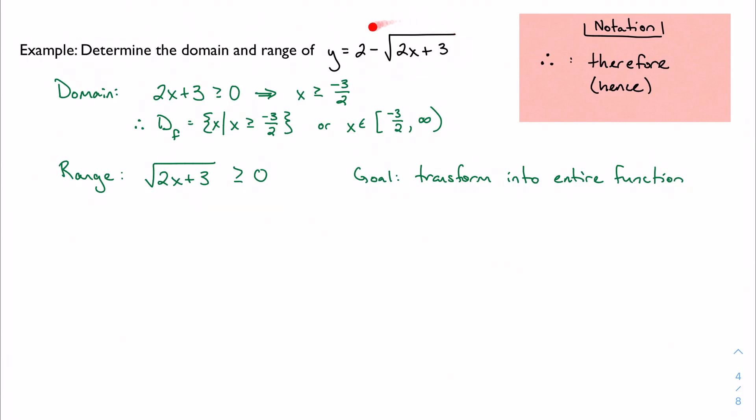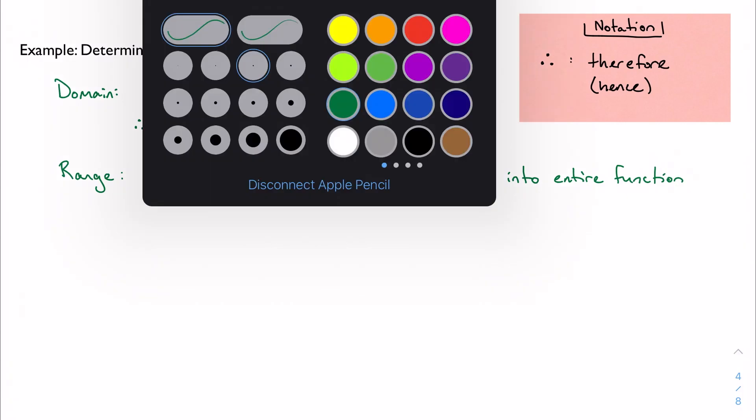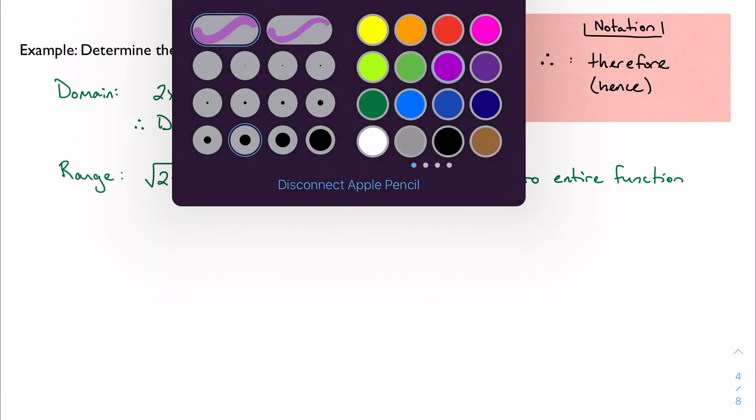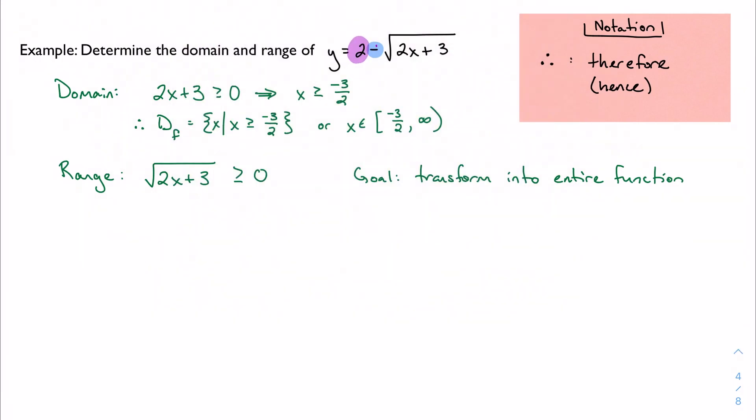So if I look at my existing piece now versus my entire function, I notice two different things. I notice that my square root is actually being subtracted. So I have to figure out a way to tack that on. And I also notice that I have this two here as well. So I'm gonna have to find a way to add both of those into the work I've already done.